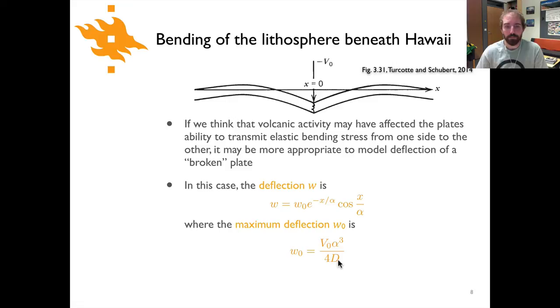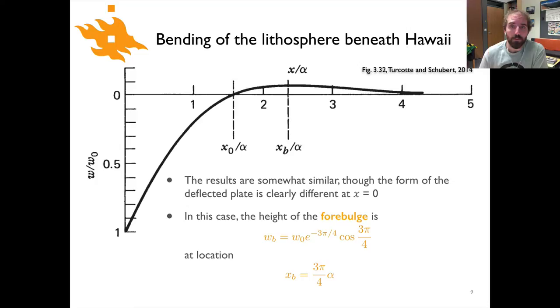Here's what the plate looks like when it's been bent in the case of a broken plate. And so you can see here again that the maximum deflection occurs at x equals zero. And in this case the plate instead of flattening out and being actually horizontal at x equals zero it's the steepest at x equals zero. So it's got the most deflection at that point but it's also the steepest and it rises then up to the four bulge in a slightly closer position to where the four bulge occurred in the previous scenario.